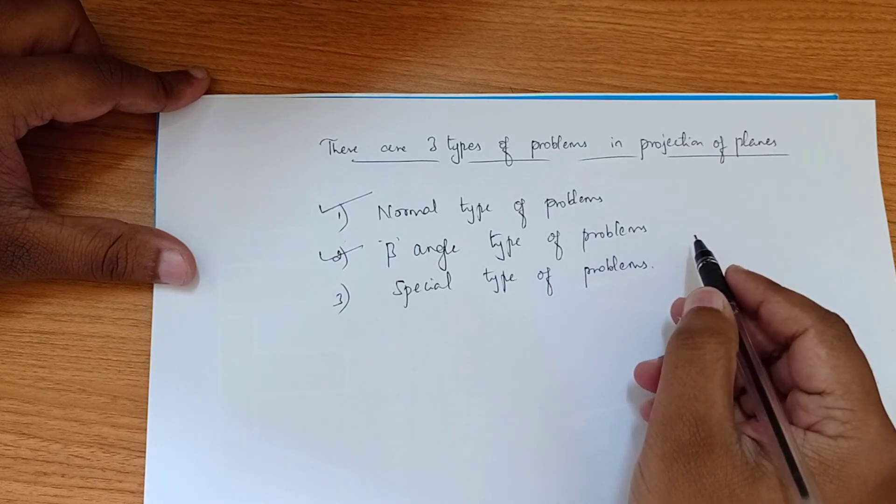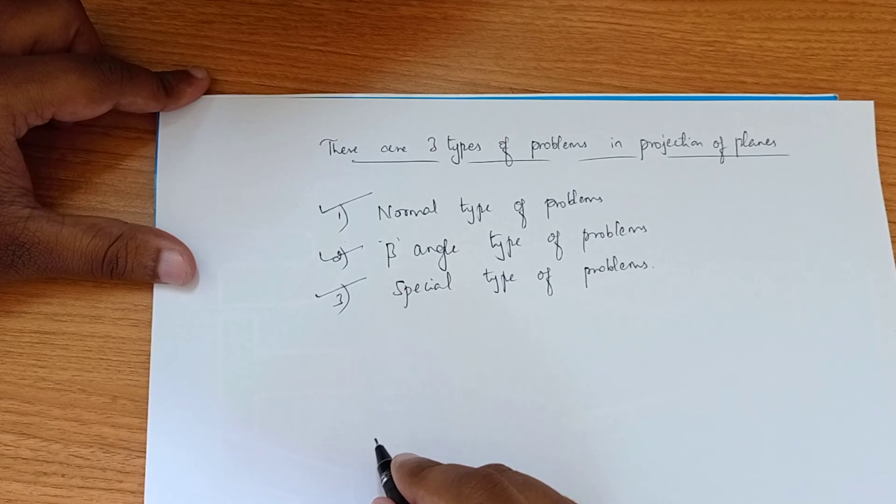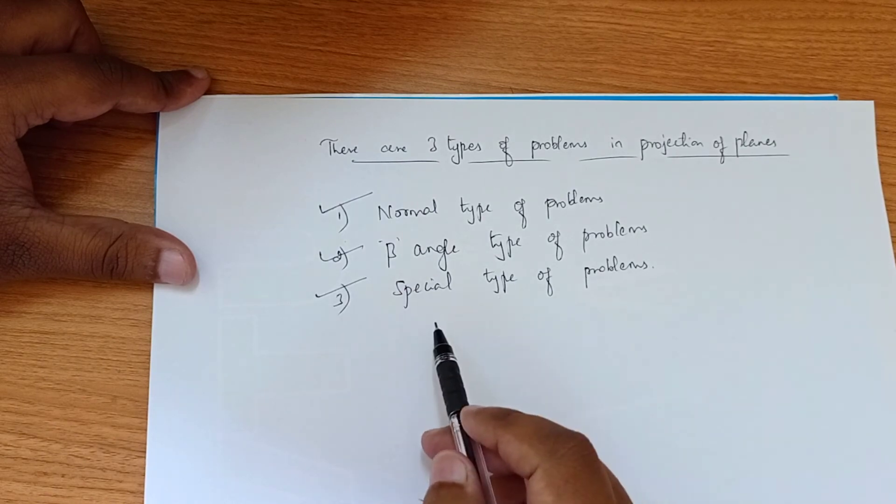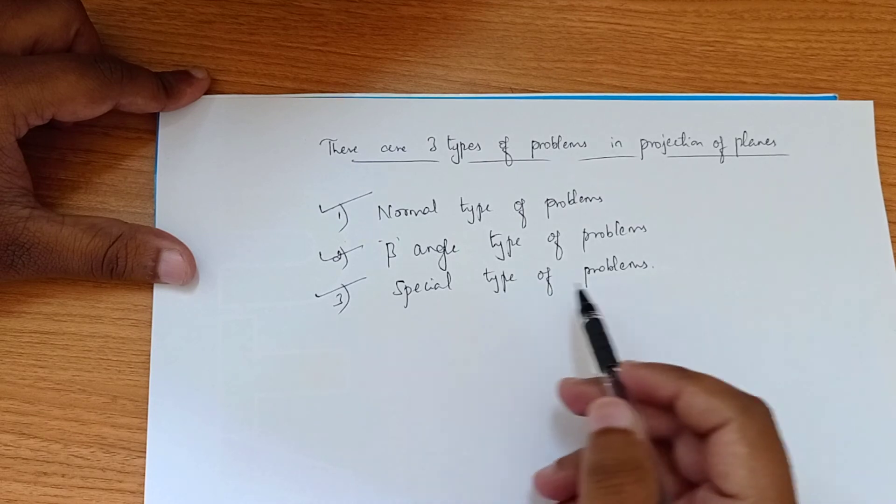After finishing the beta angle type of problems with all triangle, square, pentagon, and hexagon, we will move to the special type of problems. In these three types of problems, we will be covering all the different types of problems in the projection of planes.